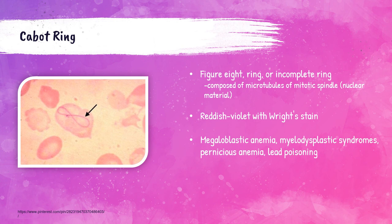This photo shows a great example of a Cabot ring in a peripheral blood smear. Cabot rings are thin reddish-violet rings that appear in loops or even in a figure-eight pattern, caused by the fragmentation of nuclear material within the red blood cell. Patients with megaloblastic or pernicious anemia can have these, as well as those poisoned with lead and those with myelodysplastic syndromes — disorders of the bone marrow that disrupt the production of normal red blood cells. These are actually really rare; I can't think of a single time I've seen a Cabot ring in person working in the field.